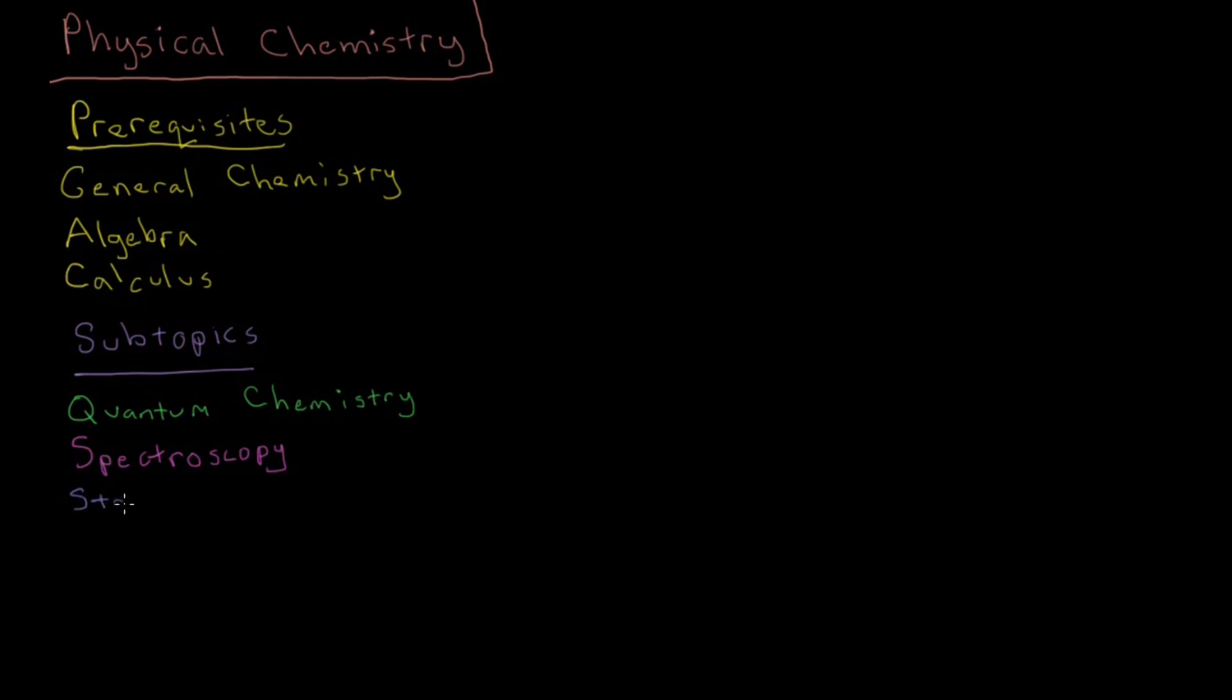Statistical mechanics is basically we're taking information about these energy levels of individual atoms or molecules, which we're getting from quantum mechanics, and then building up from the ground up from one individual molecule to the behavior of very large things.